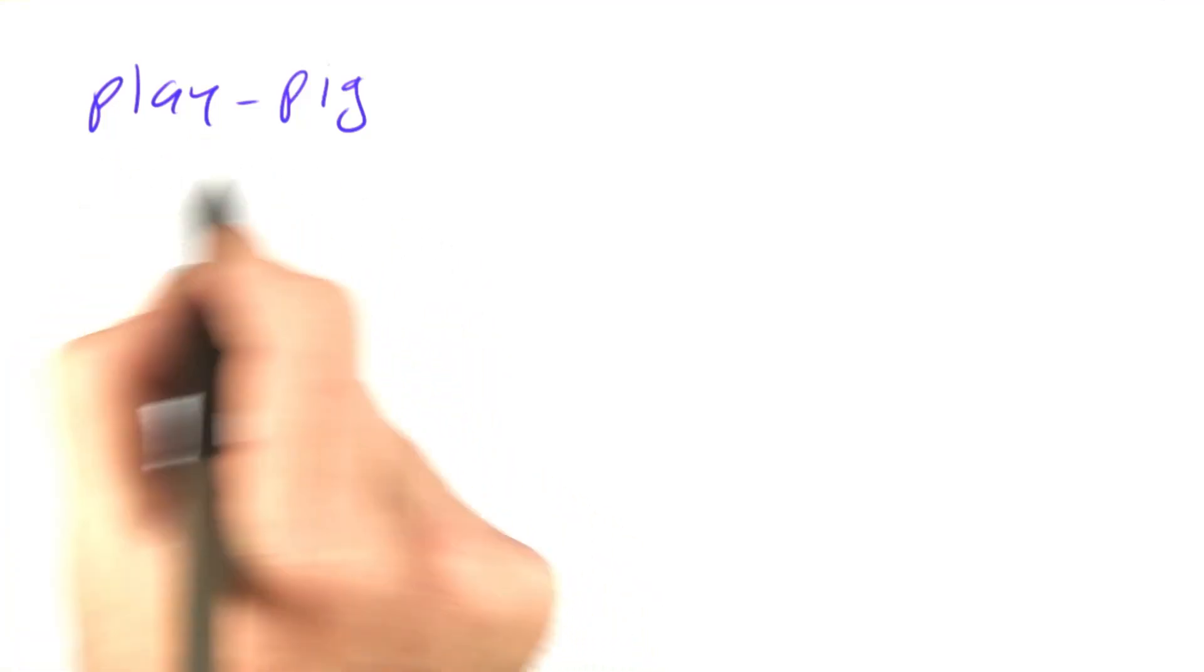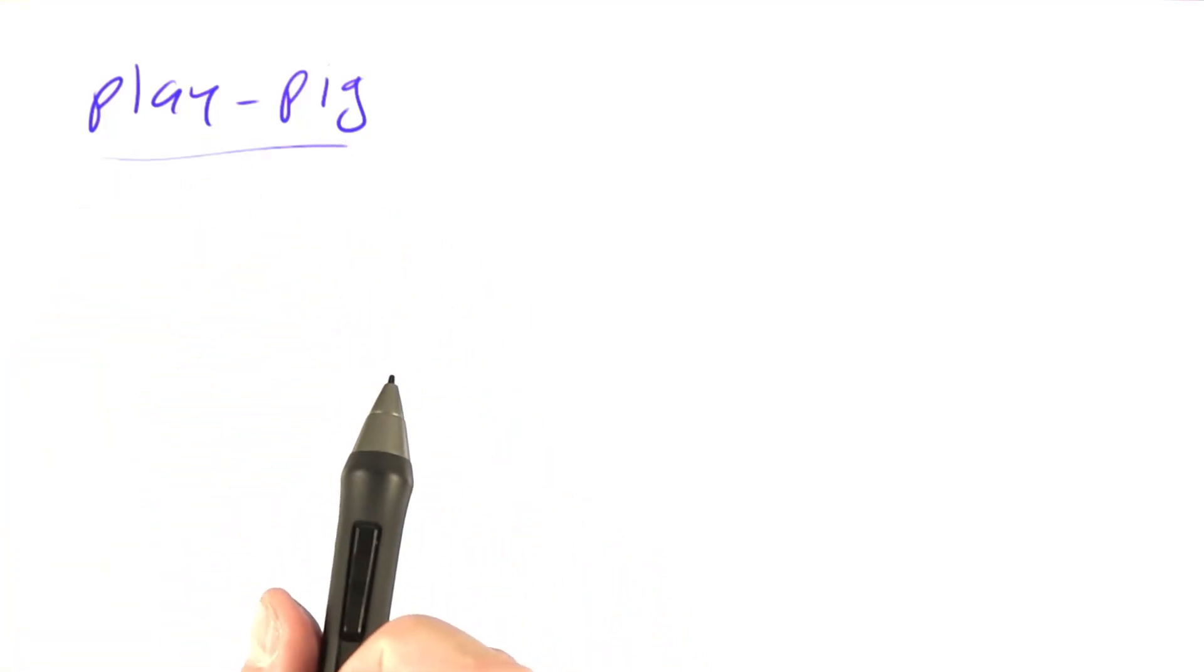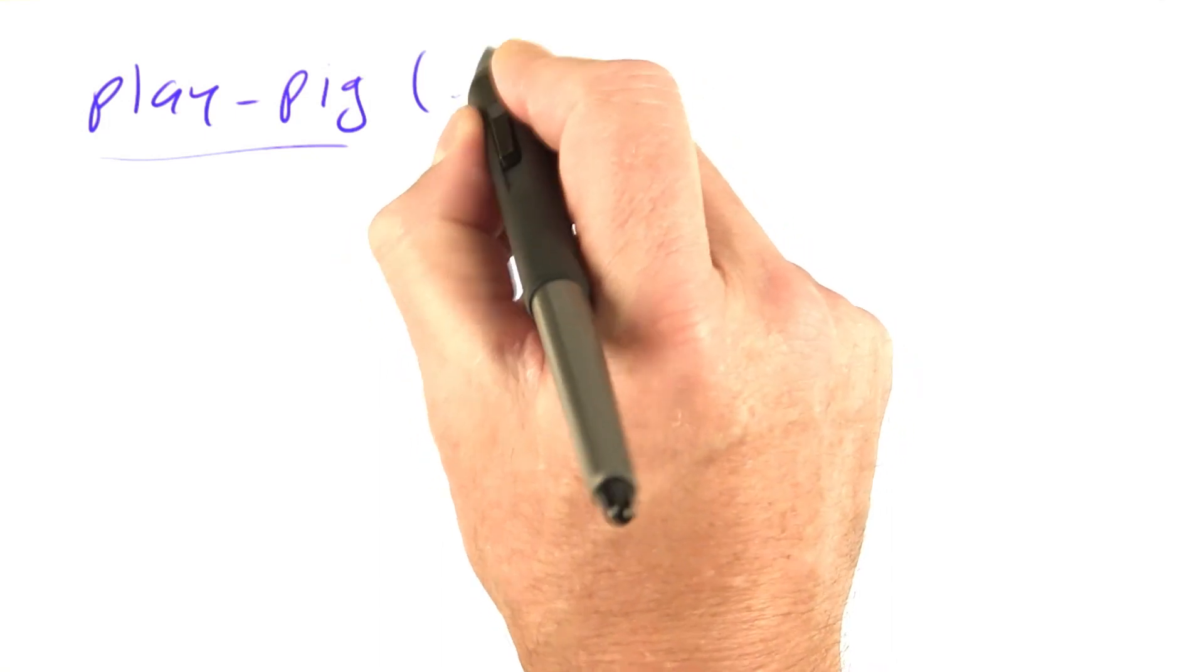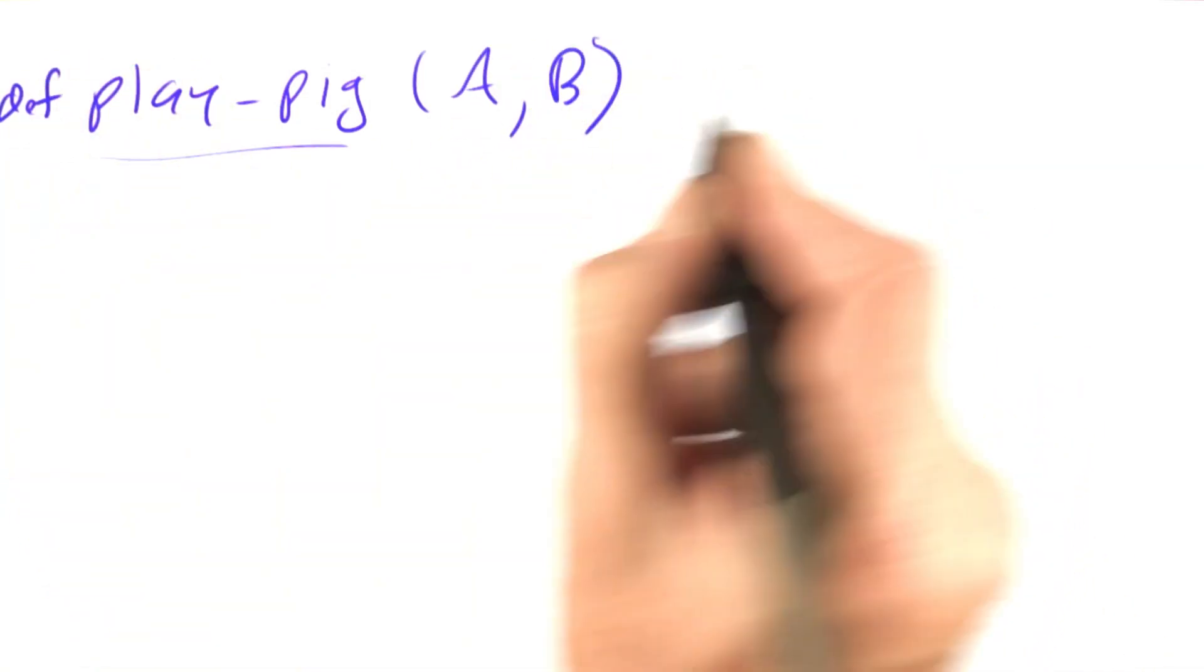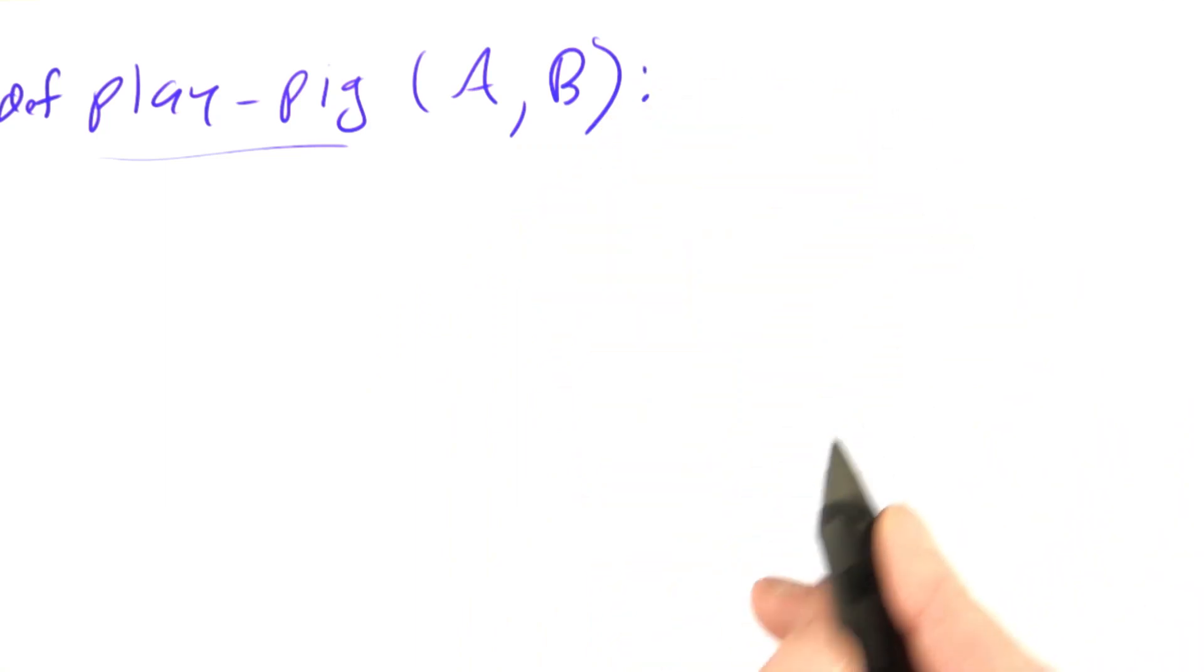Now let's talk about the design of the function playPig, which plays a single game of Pig. We decided that this is a two-player game, player A and B, and we decided we're going to represent this as a function.